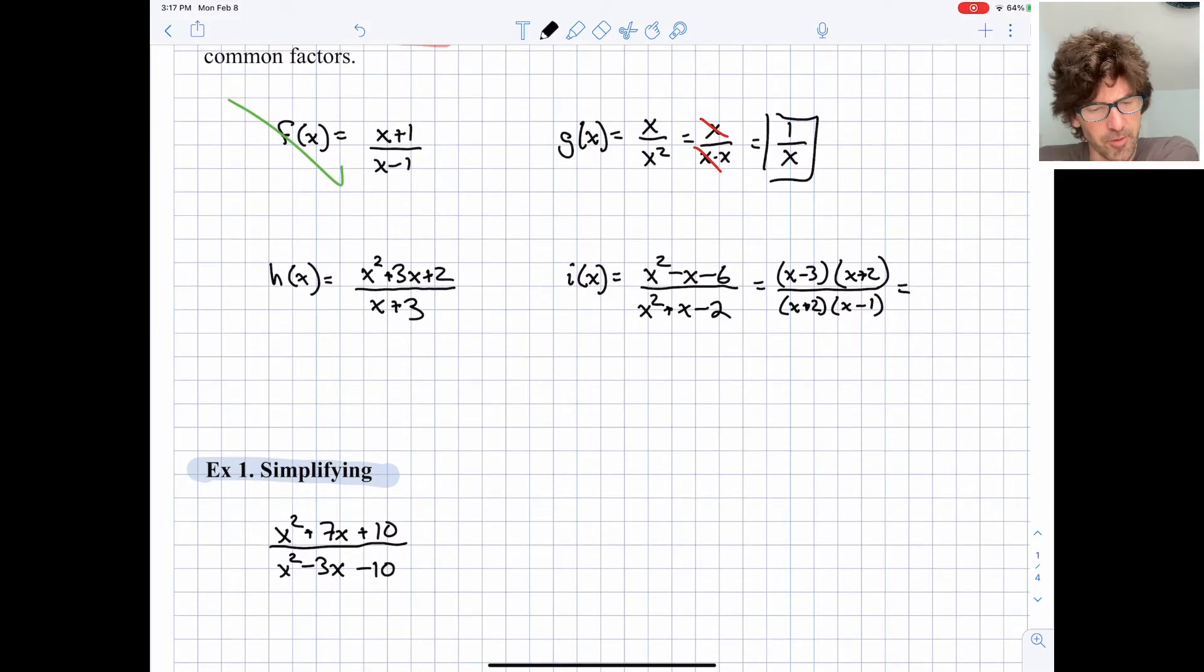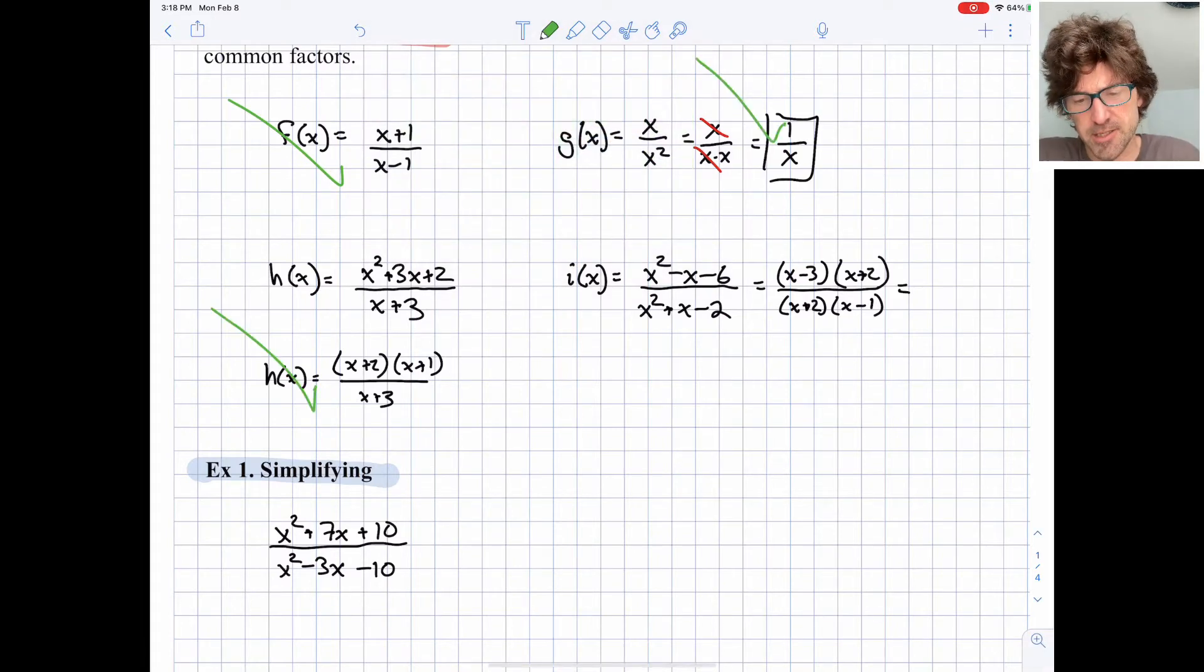Sometimes you need to do a little bit more factoring. So for h(x) that would factor into x plus 2, x plus 1 up top and then x plus 3 down below. So that is in simplest form. There's no canceling that can happen.